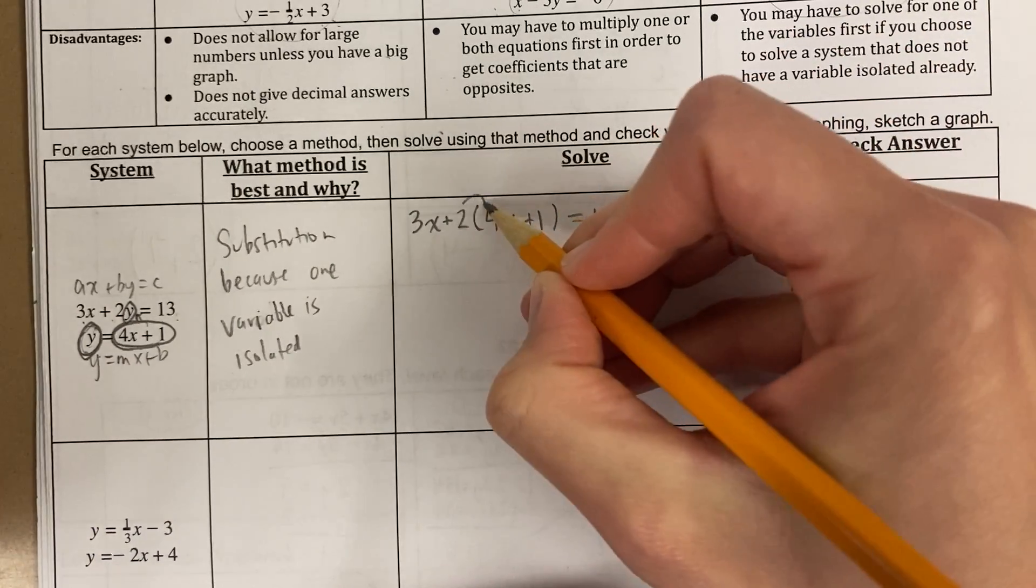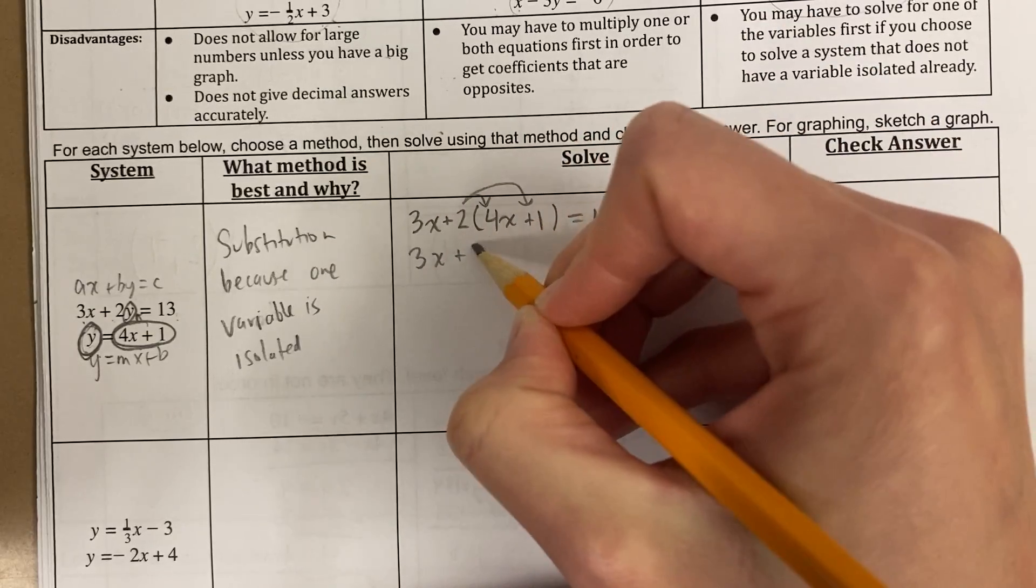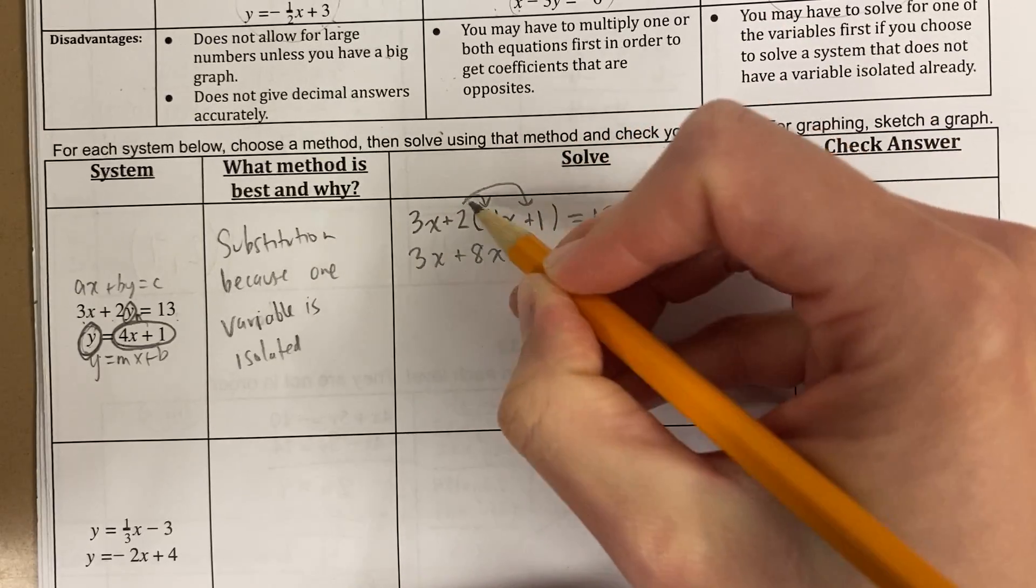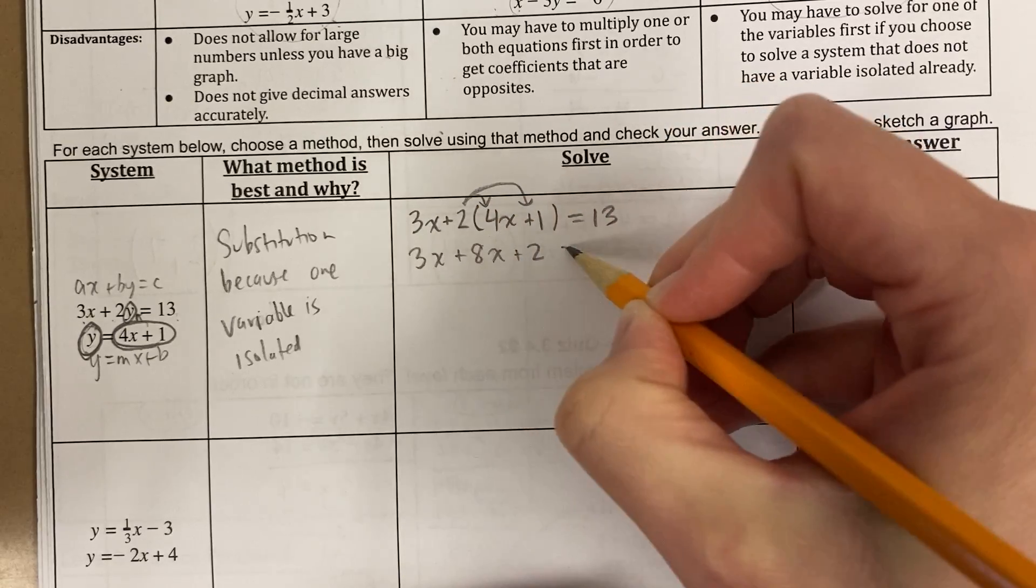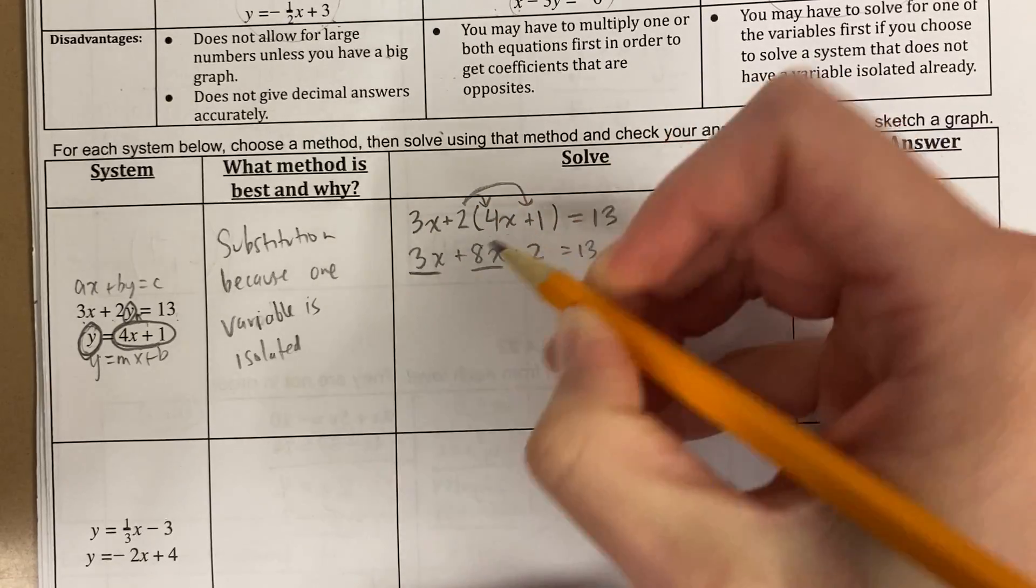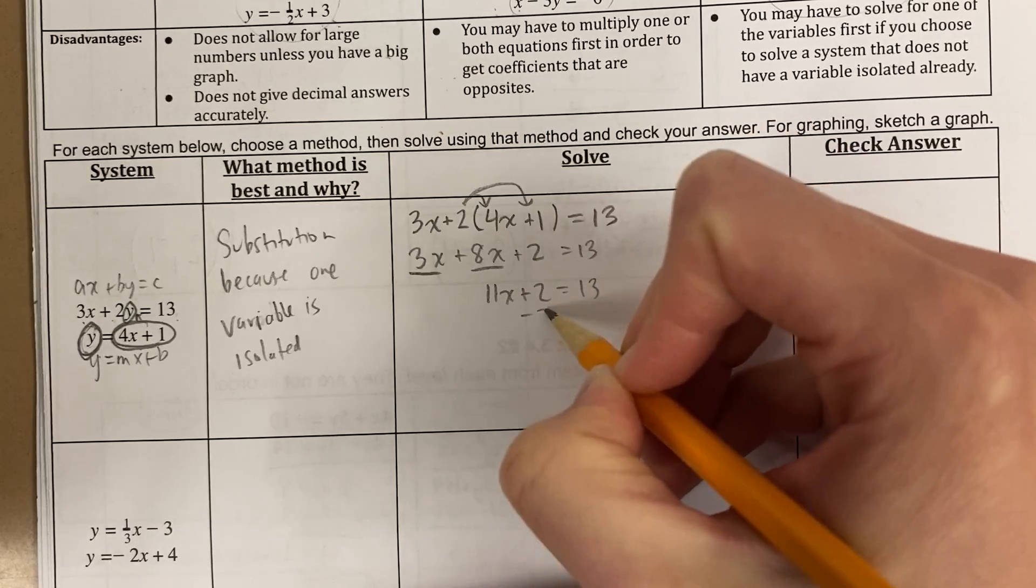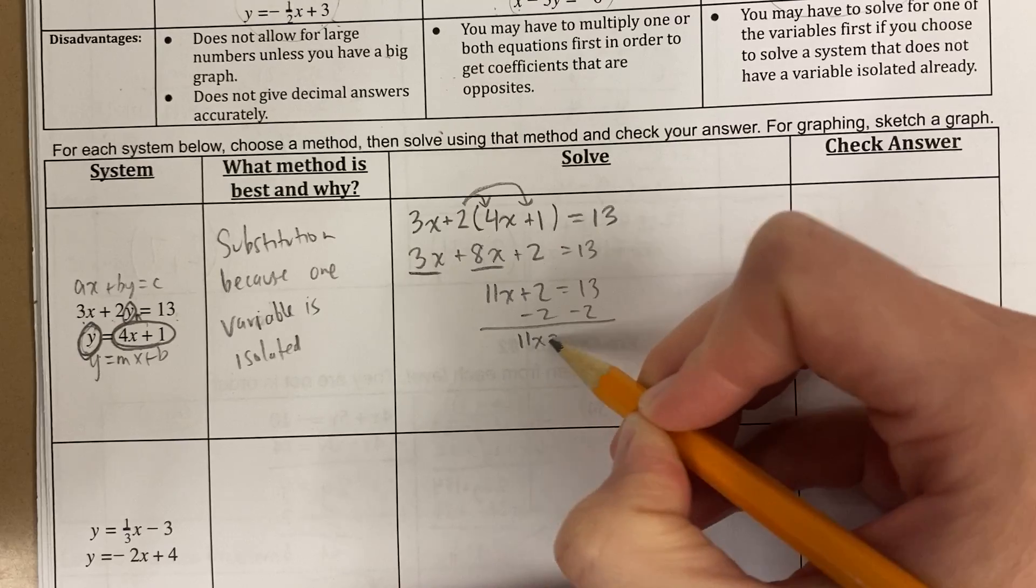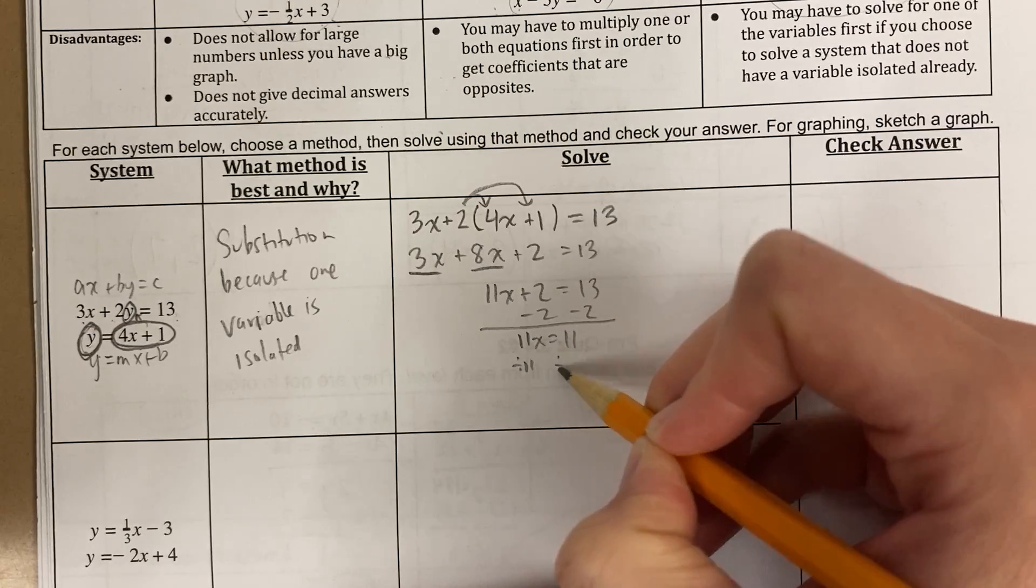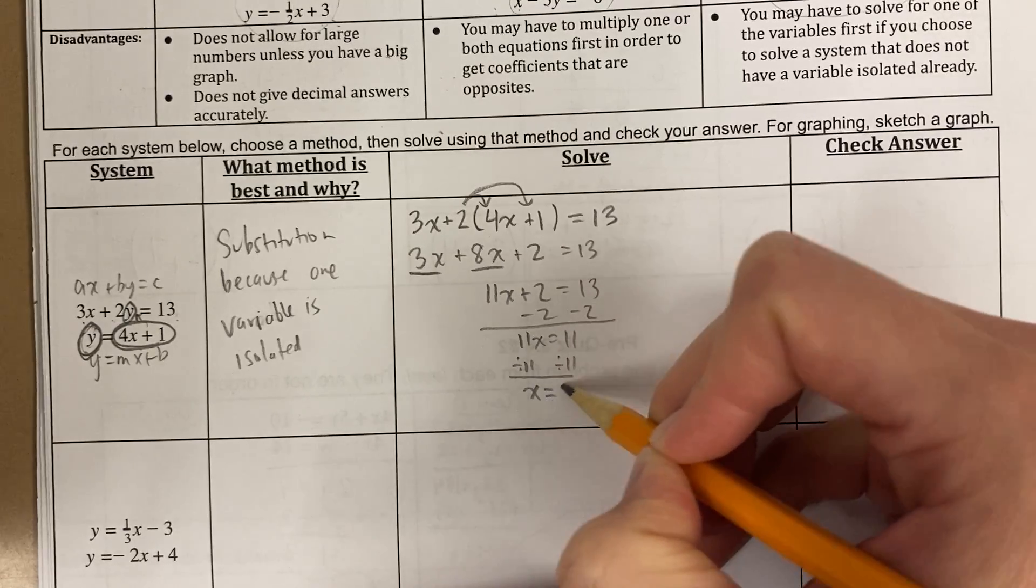I'm going to go ahead and solve this, first distributing. Make sure to multiply 2 times 1, I get 2. I combine my like terms here, and I'm going to solve for x first by subtracting 2 from both sides, then by dividing by 11, I get x equals 1.